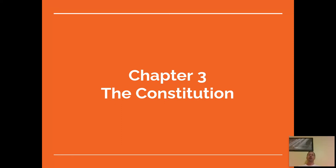Hey guys. Chapter 2 was all about the Articles of Confederation, our nation's first constitution. And with the Articles, there were quite a few shortcomings. And so we met in Philadelphia in 1787 to quote, revise the Articles. And what we ended up with was a brand new constitution. And that's what we're going to look at with this chapter — the details of the constitution, what's inside.